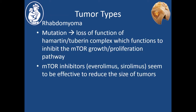These tumors are related to mutations causing loss of function of the Hamartin-tuberin complex, which works in a pathway that inhibits the mTOR — mammalian target of rapamycin — growth and proliferation pathway. mTOR inhibitors such as Everolimus or Sirolimus seem effective in reducing the size of rhabdomyomas. Studies are currently being done, with small studies and case reports indicating these can be helpful in patients with complications like outflow or inflow tract obstruction.